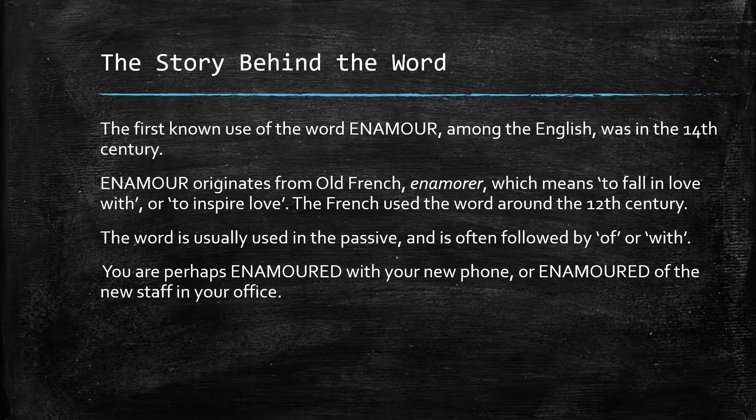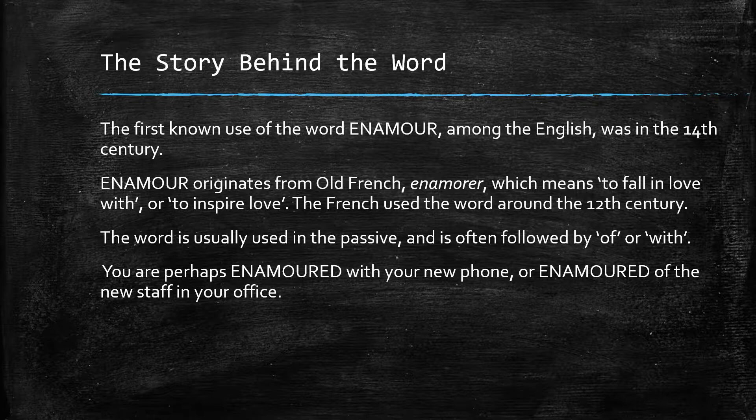The story behind the word. The first known use of the word enamor among the English was in the 14th century. Enamor originates from Old French 'enamorer,' which means to fall in love with or to inspire love. The French used the word around the 12th century. The word is usually used in the passive and is often followed by 'of' or 'with.' You are perhaps enamored with your new phone, or enamored of the new staff in your office.